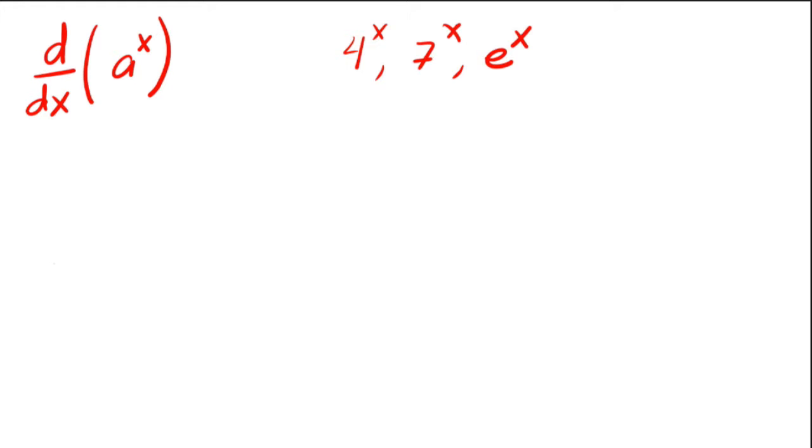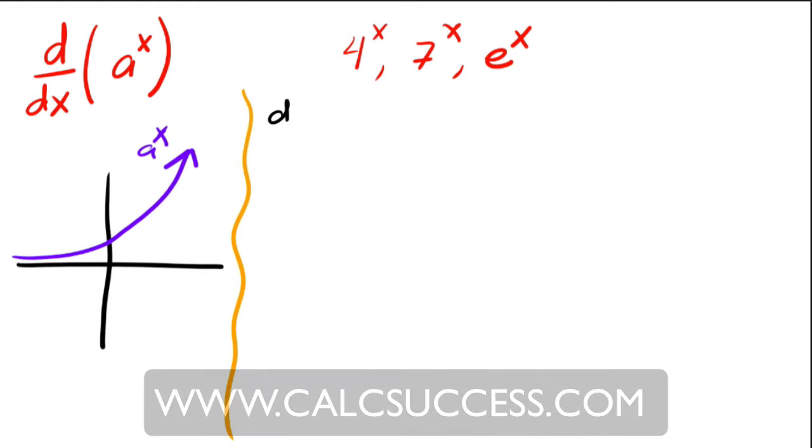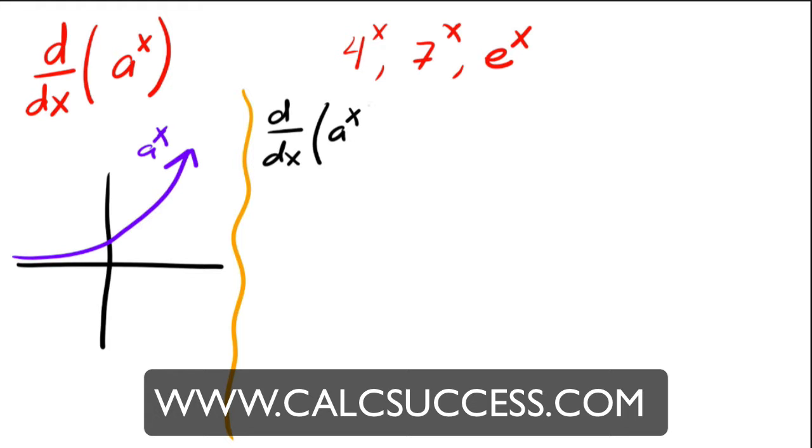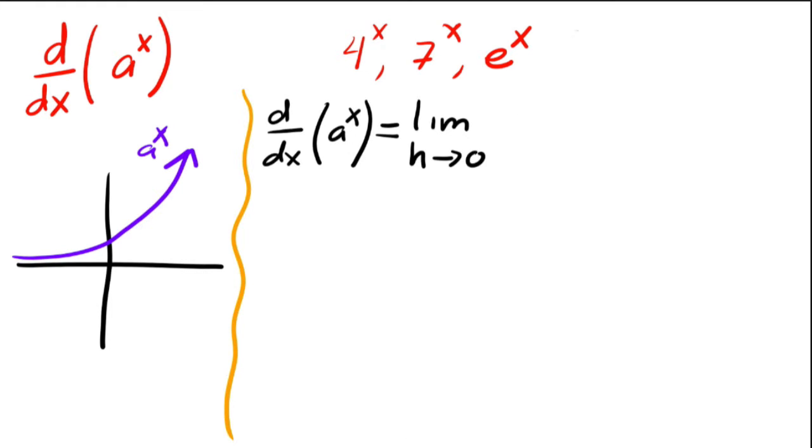So let me draw a picture here before we go through this. If I draw the general exponential function, it looks something like this. Now, since we don't know what it is, why don't we find the derivative using the definition. So the derivative of a to the x is, you remember the definition of the derivative, right? Okay, so that's the limit as h goes to zero. Why don't I write it down up here. So the derivative is the limit as h approaches zero of f of x plus h minus f of x all over h.